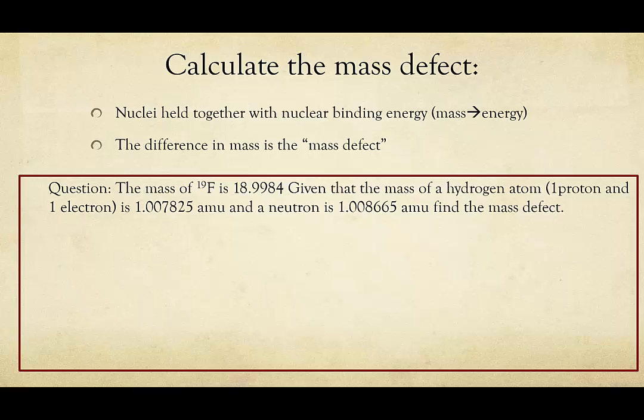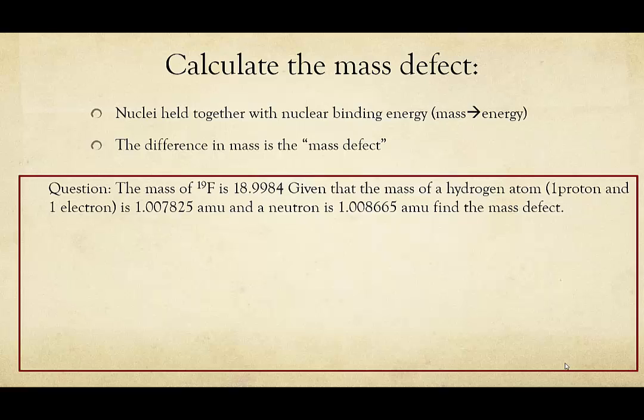First, we need to calculate what we would expect the mass to be given the number of protons, neutrons, and electrons. We know the masses of a proton and an electron, and we know the mass of a neutron. So we can simply do the multiplication and addition to get our number.